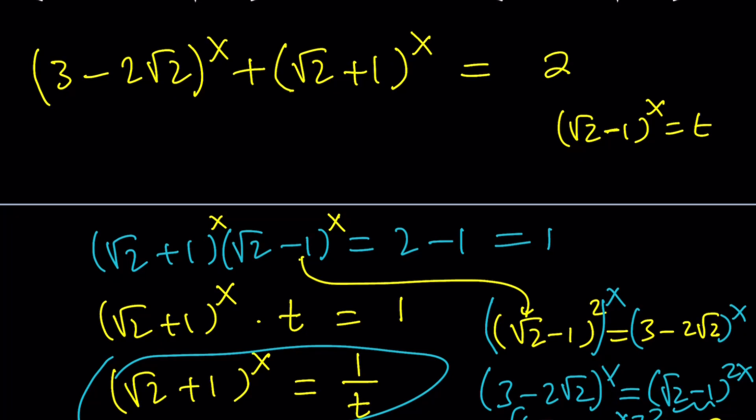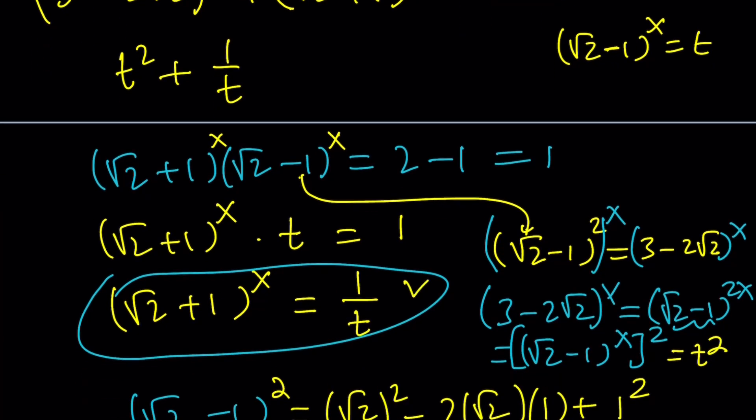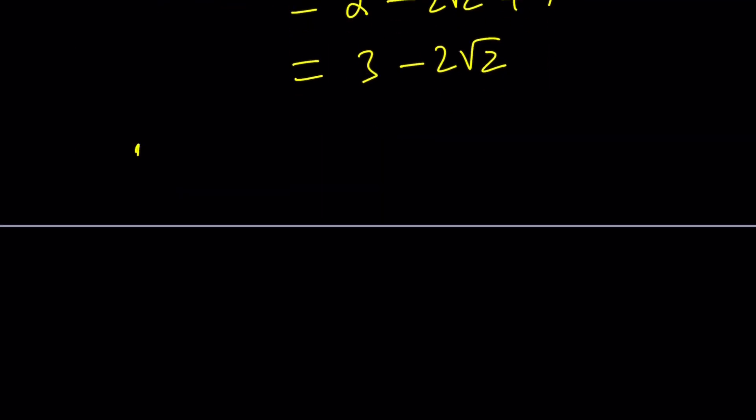Now, this becomes t² and remember this is 1/t because it's the reciprocal. So now this equals 2 and then this is my equation. I'm going to write it down again one more time: t²+1/t = 2. I don't want to erase everything because I don't want to get in trouble in case I need these later.